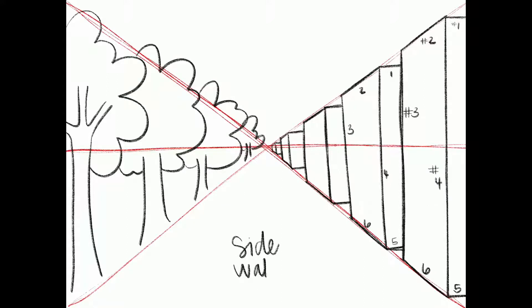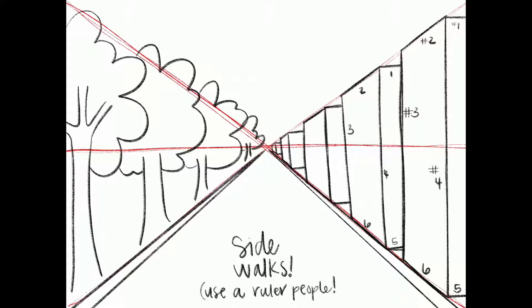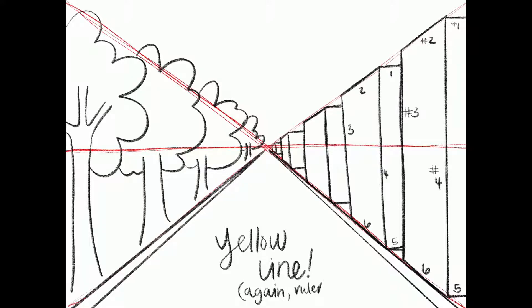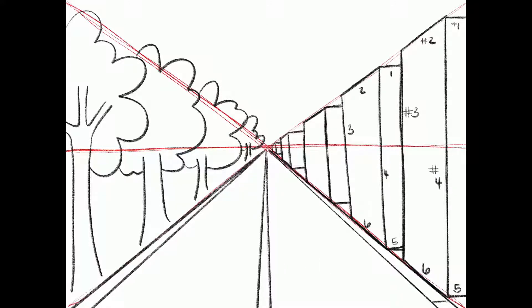Next is the sidewalks that are going to be on both sides of my street. For this I'm going to start at my vanishing point and use my ruler. The next thing I'm going to do is my yellow lines. Again people use your rulers. Your ruler is going to be your best friend. I'm just going to draw two lines from my vanishing point.